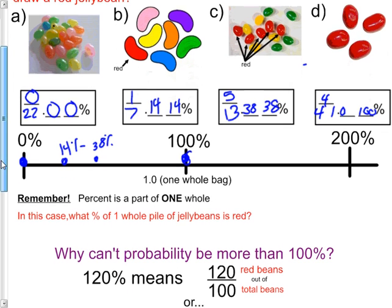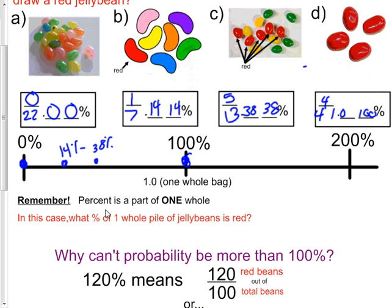There are other ways to write that. We'll take a look at that. And again, just remember percent is a part of one whole. And all probabilities show a part of a whole. In this case, what percent of one whole pile of jelly beans is red? And we have that on our number line.